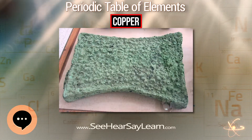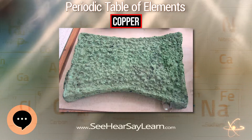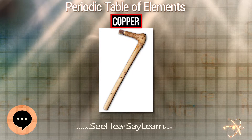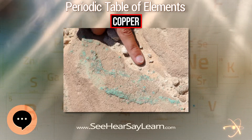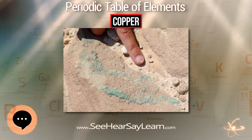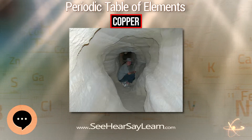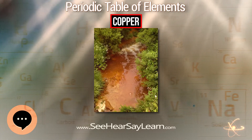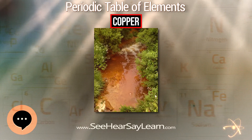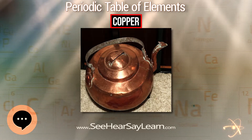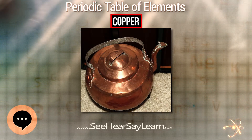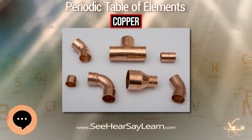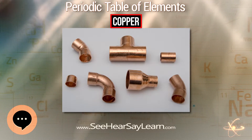The Cu²⁺ aqua complex exhibits the fastest water exchange rate for any transition metal aqua complex. Adding aqueous sodium hydroxide causes the precipitation of light blue solid copper hydroxide. Aqueous ammonia results in the same precipitate, but upon adding excess ammonia the precipitate dissolves, forming tetraminocopper. Many other oxyanions form complexes, including copper acetate, copper nitrate, and copper carbonate.